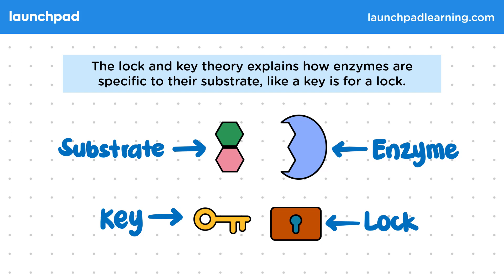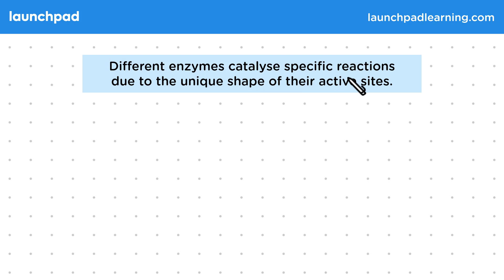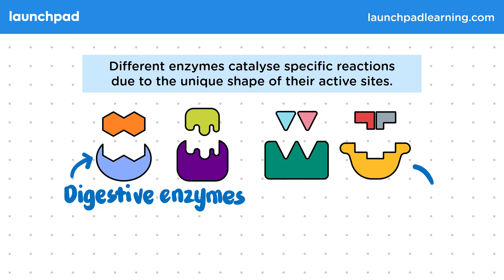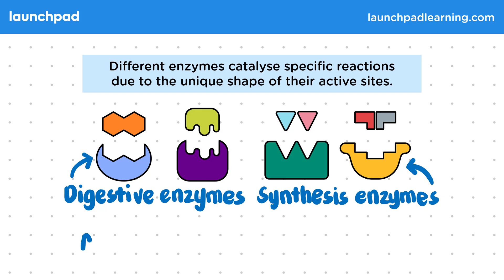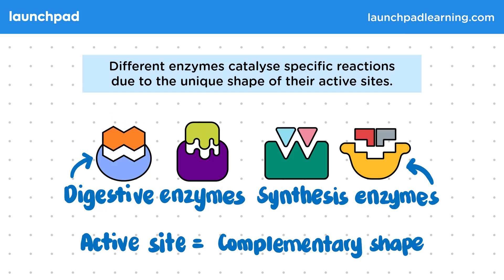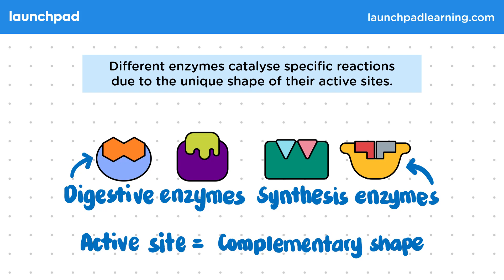So why is it that enzymes are specific for their substrate? Different enzymes catalyse specific reactions due to the unique shape of their active sites. On the left hand side you can see digestive enzymes which break down their substrate, and on this side are synthesis enzymes which join molecules together. You can see that the active site is complementary to the shape of the substrate. In this animation, each substrate fits neatly into their complementary active site. It's really important that you understand that the shape of the active site determines what substrates can bind to the enzyme.